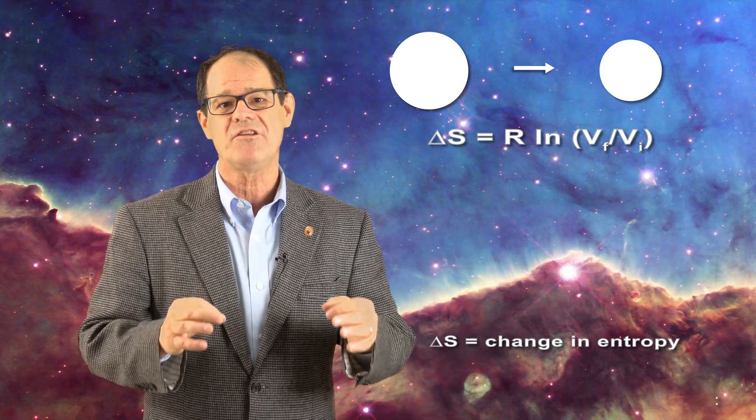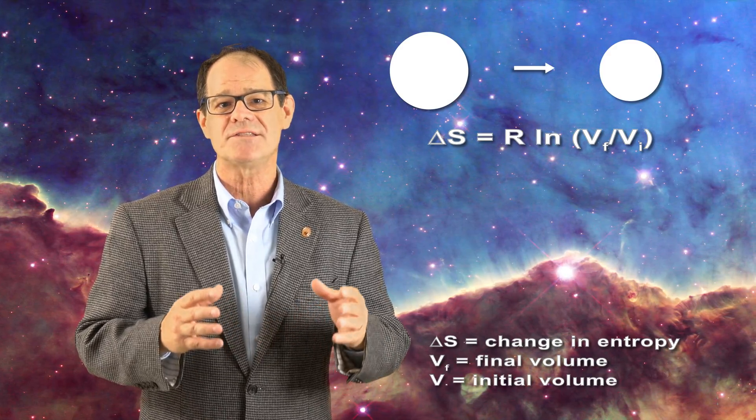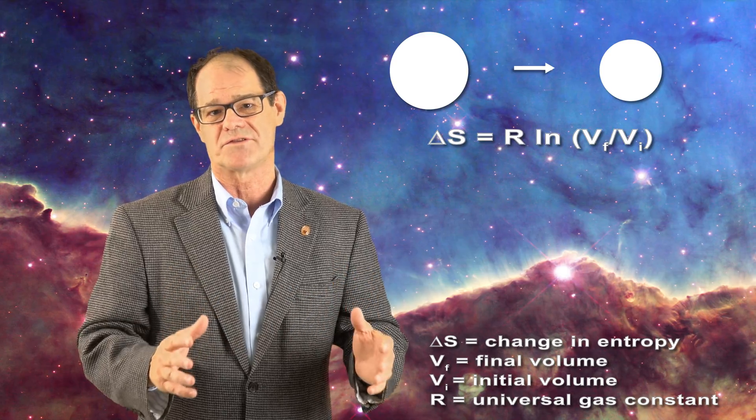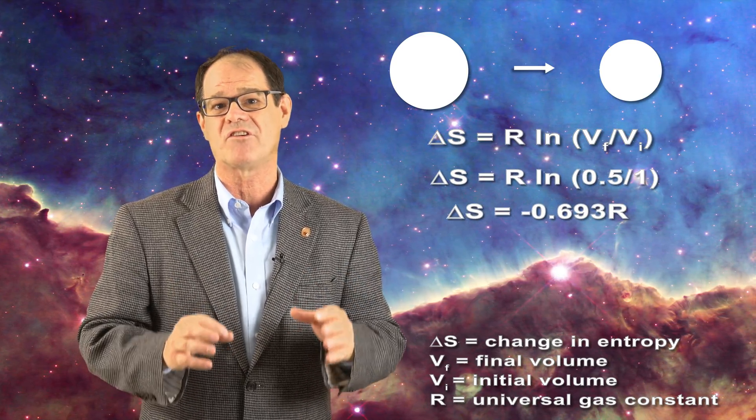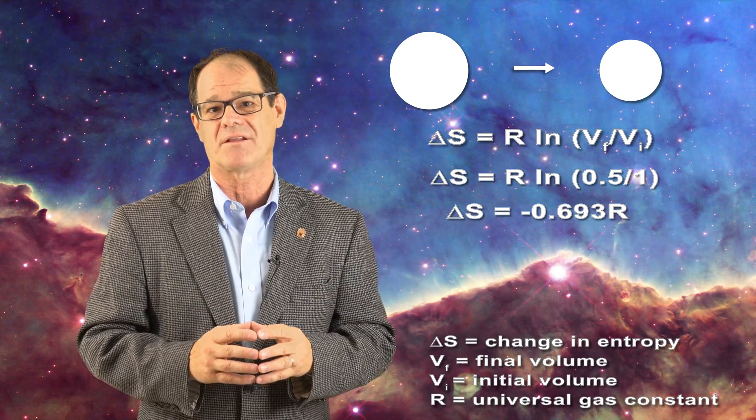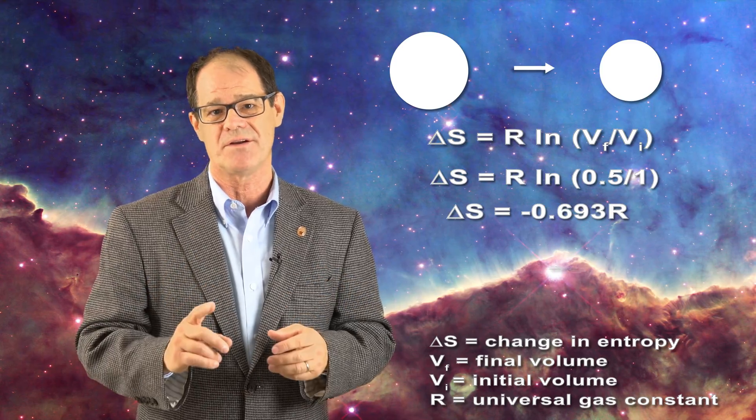The entropy change in this case is just equal to the following. Where delta S is the change in entropy, V sub F is the final volume, V sub I is the initial volume, and R is the universal gas constant. In this case, we get a negative entropy change, which is a direct violation of the second law.